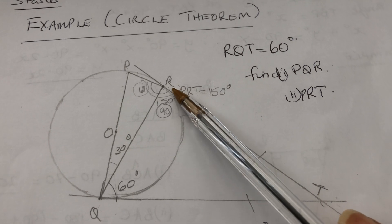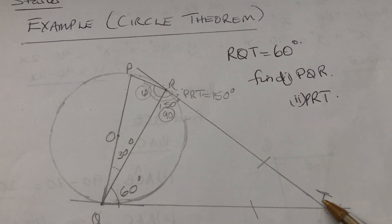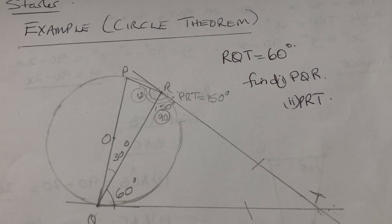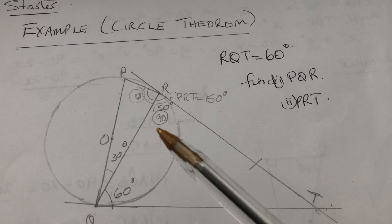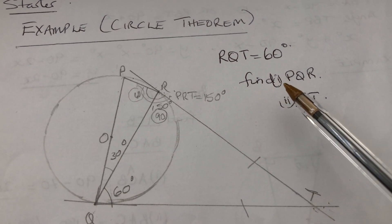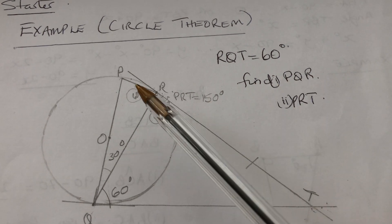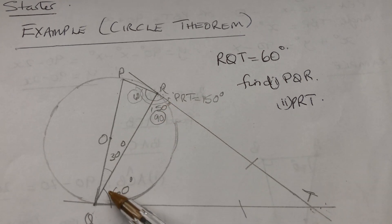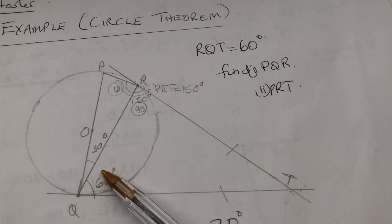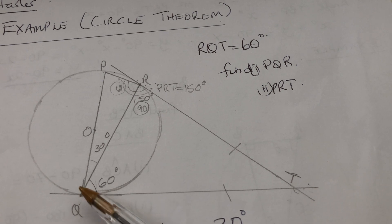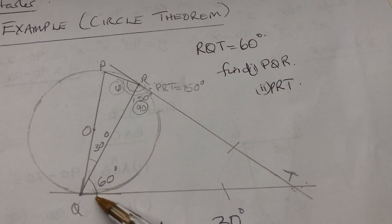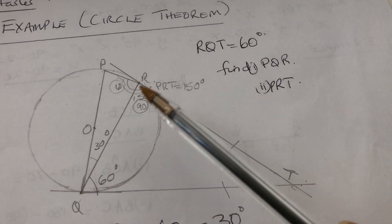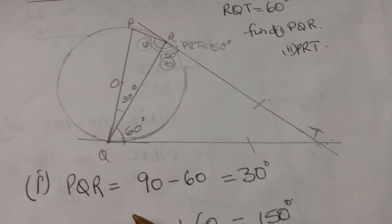If RQT is 60 degrees, we have to find PQR. Since this is a tangent, the full angle would be 70, so if this is 60 then that will be 30. So PQR is 30 degrees.